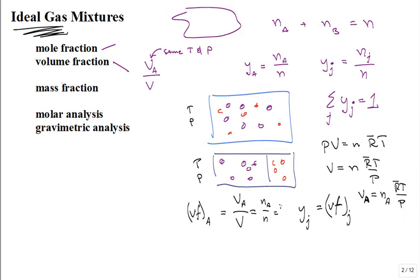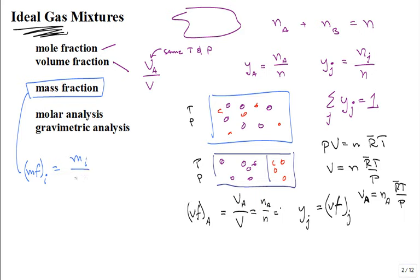What about mass fraction? Some textbooks use X for mass fraction, which is very confusing to students, so we use MF for mass fraction. The mass fraction of component I is the mass of I divided by the total mass of the mixture. To convert between mass fraction and mole fraction, just think about the relationship between m_i and N_i.